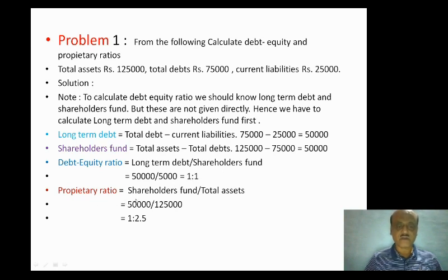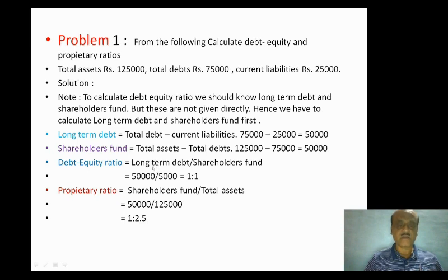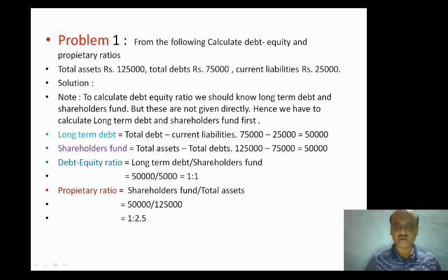Next, proprietary ratio. The proprietary ratio formula is shareholders fund divided by total assets. Shareholders fund is $50,000, divided by total assets $1,25,000. So the proprietary ratio is 1 is to 2.5. So 1 is to 2.5 is the proprietary ratio.